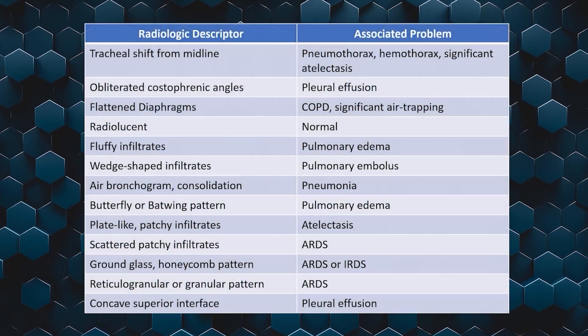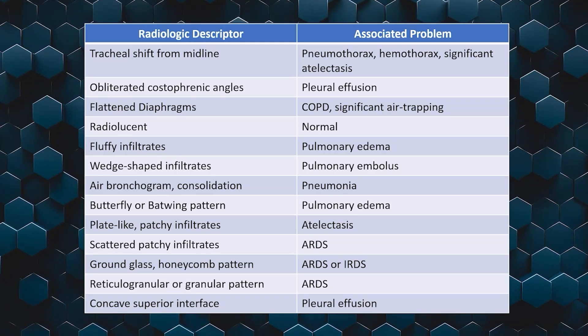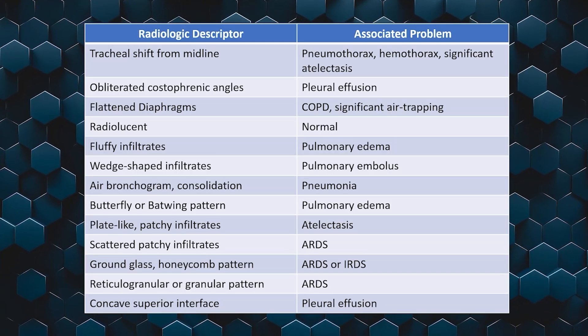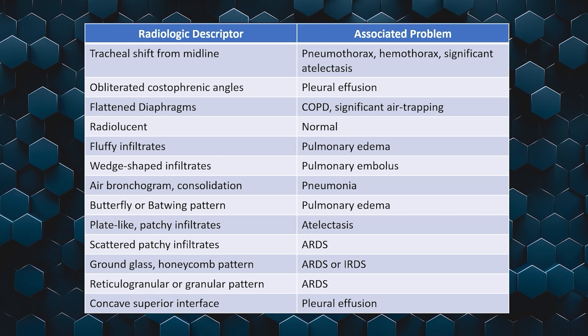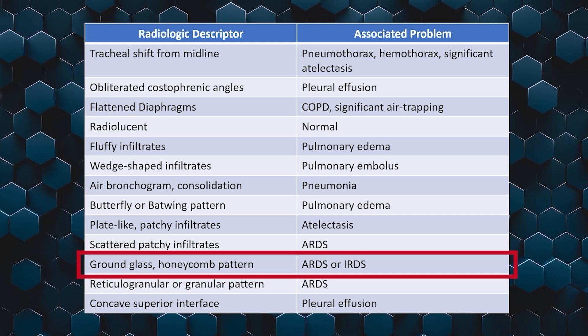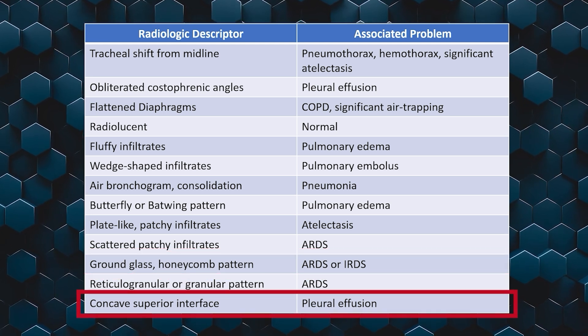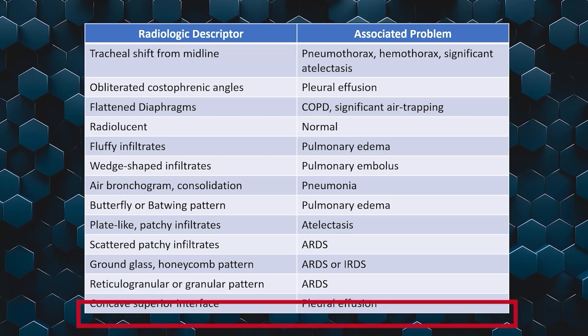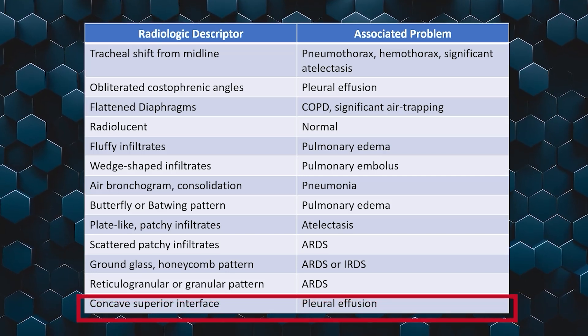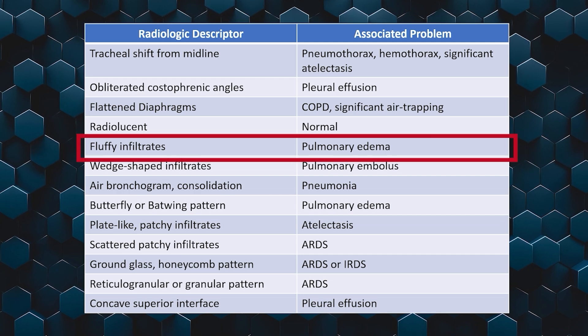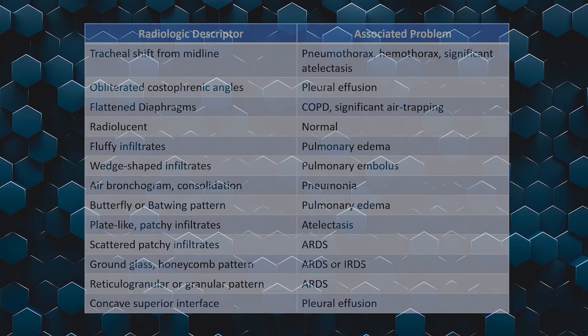Perhaps more important than looking at a chest x-ray and diagnosing the patient on the NPRC exam are the words or descriptions they'll use. We have a table of descriptions showing words you might see on the exam or in a patient's chart. For example, reticulogranular or honeycomb pattern is associated with ARDS. A concave superior border or concave interface suggests pleural effusion. And fluffy infiltrates — as we've discussed — indicates pulmonary edema.